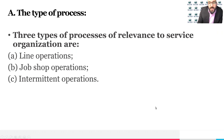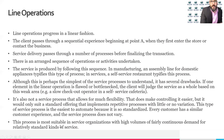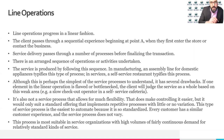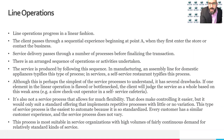Let's start with the first type: line operations. Line operations progress in a linear fashion — the client passes through a sequence of experiences, beginning at point A when they first enter the store or contact the business. The customer goes through process one, two, three in sequence. Service delivery passes through a number of processes before finalizing the transaction, arranged in a sequence that helps serve the customer.